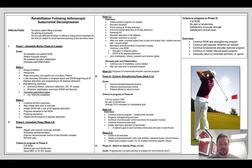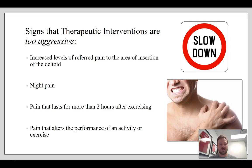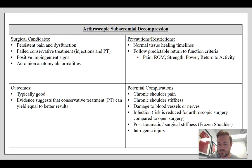These people don't typically need rotator cuff repairs because they're young enough that they still have viable rotator cuff tissue, but they're having impingement pain. Signs that therapeutic interventions are too aggressive — and this goes for all types of shoulder interventions — include increased levels of referred pain in the shoulder to the area of the deltoid, which tells you the rotator cuff is getting strained or the subacromial structures are getting irritated. Night pain, pain that lasts more than two hours after exercising, and pain that alters the performance of an activity are all signs that you need to slow down.